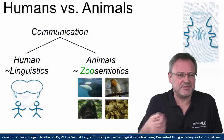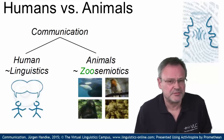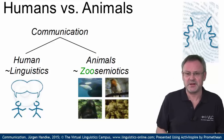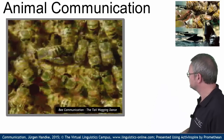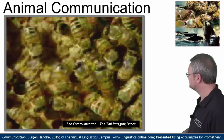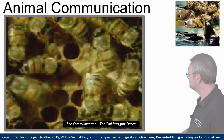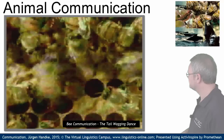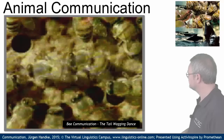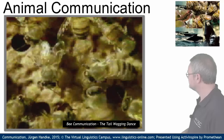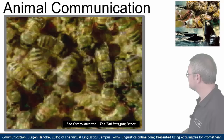Let us exemplify these modes of communication on the basis of a VLC video produced several years ago. One of the most remarkable communication systems found in the non-human world is that of the European honeybee. In performing the so-called tail wagging dance, the bee is able to indicate the exact location of food sources beyond 100 meters.